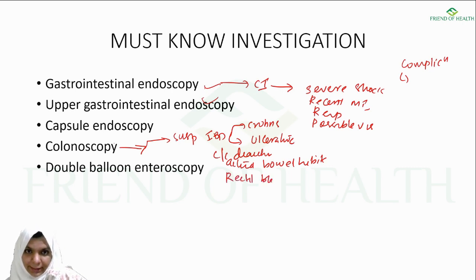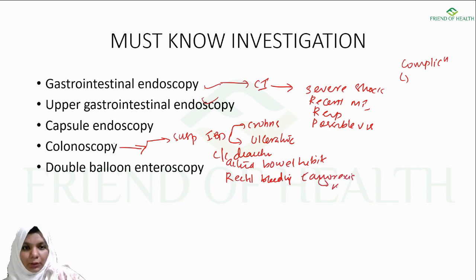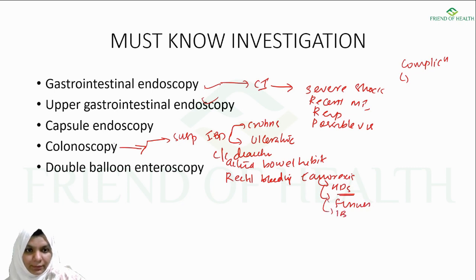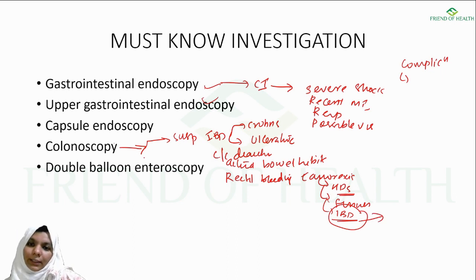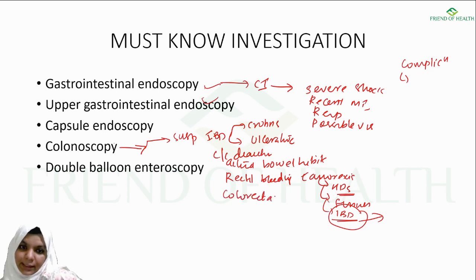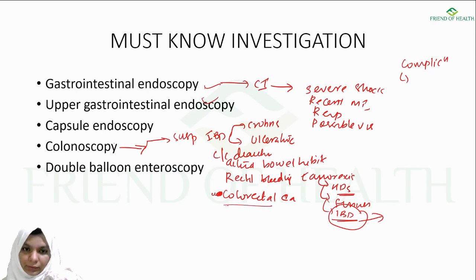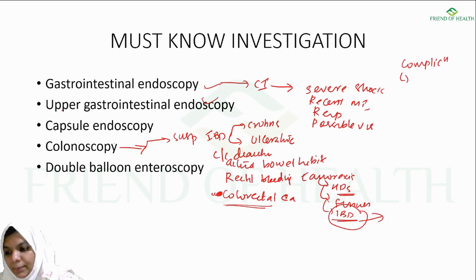Rectal bleeding with anorexia is another indication, but you must first rule out hemorrhoids and fissures, then inflammatory bowel disease. If IBD is severe, colonoscopy can be advised. Colonoscopy is also used to screen for colorectal cancer when obvious symptoms are pointing towards it.